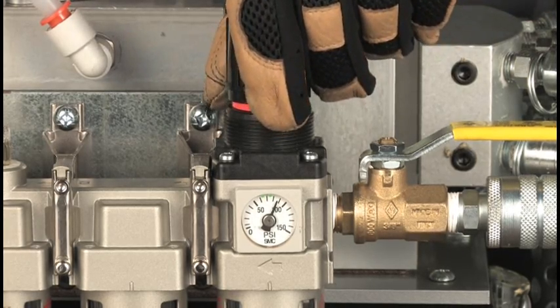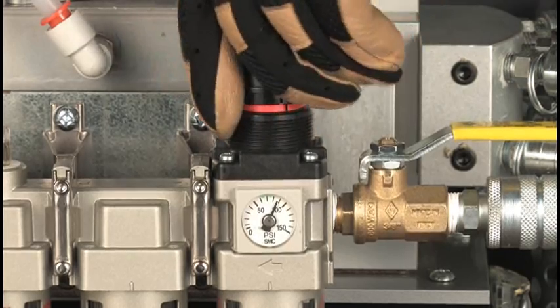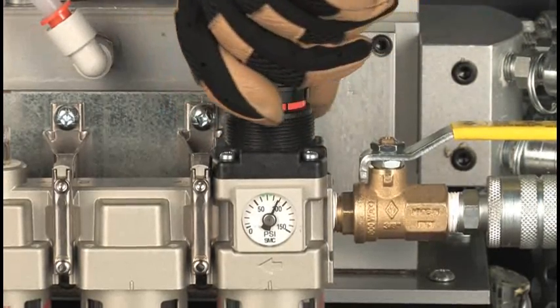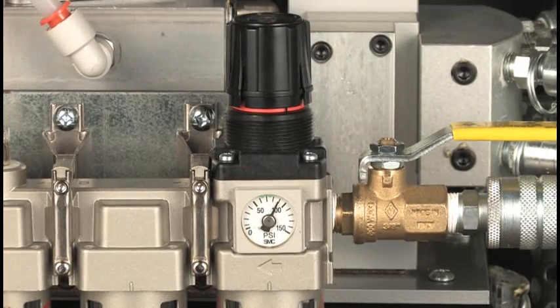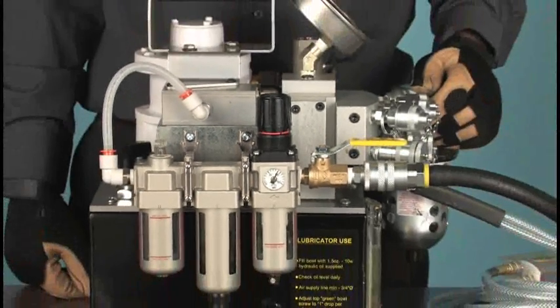The speed of the pump depends not just on the pressure, but on the volume of air supplied. For best operation, the pump requires 40 to 50 cubic feet per minute through at least a three-quarter inch supply hose.